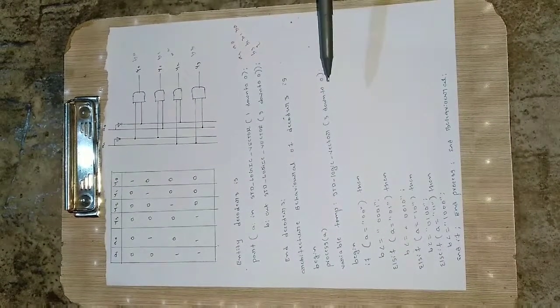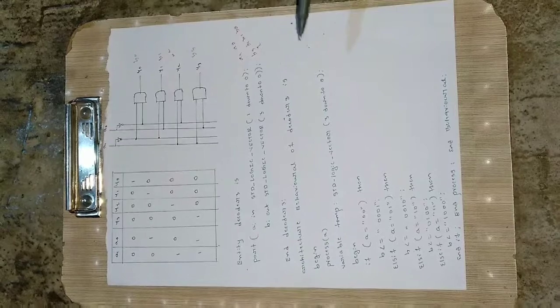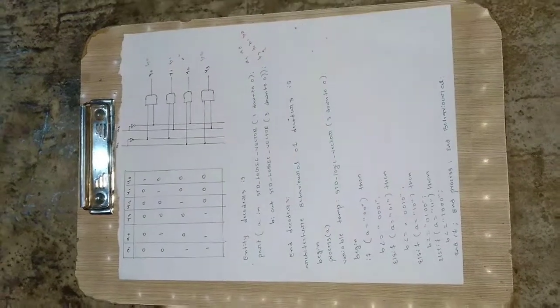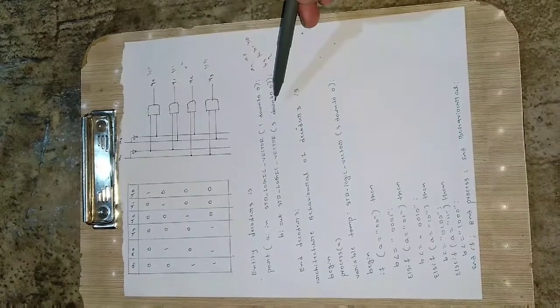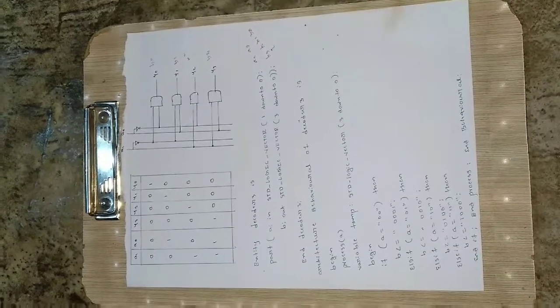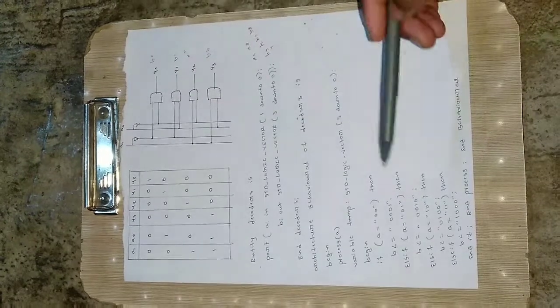So it will be also having 3 down to 0. Means temp 3, temp 2, temp 1 and temp 0 will be the output for that one. So it is 4 bit. Sorry, I am saying 3 bit, it is 4 bit and this is also 4 bit. So for this process we will be having a begin here.